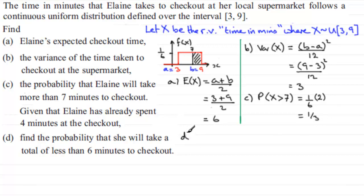Now, in part D, what we are told is that, given that Elaine has already spent 4 minutes at the checkout, we've got to find the probability that she'll take a total of less than 6 minutes to check out. So, written down, it's this. We've got to work out the probability that X is less than 6. Find the probability that she'll take a total of less than 6 minutes, but we are given, so we put a vertical line here, we are given that Elaine has already spent 4 minutes at the checkout, so we know that X is greater than 4. So, this is basically a conditional probability, and we should be familiar with how we go about working out conditional probabilities.